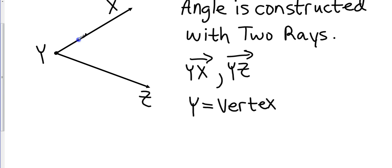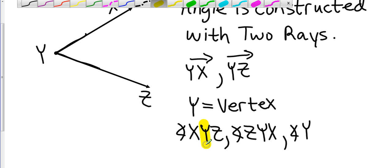I can label this angle three different ways. This could be angle x, y, z. It could also be angle z, y, x. And I could also label it because there's nothing else connected to it as simply angle y. Notice that y is the vertex and it's always in the middle if I do a three letter label. The vertex is always in the middle of a three letter label.